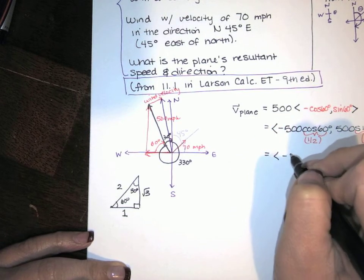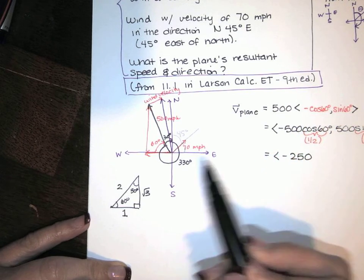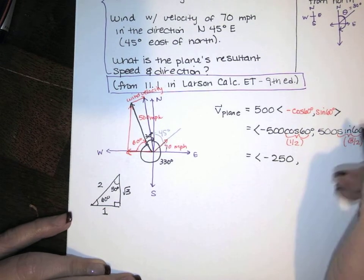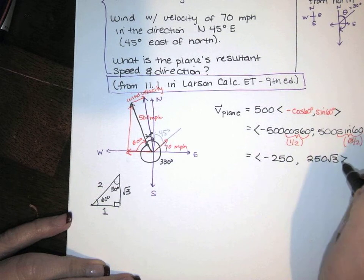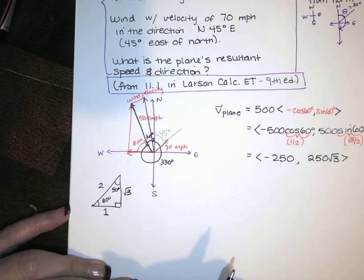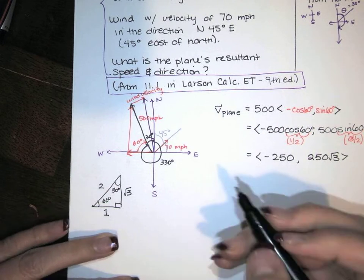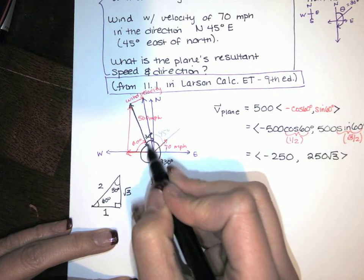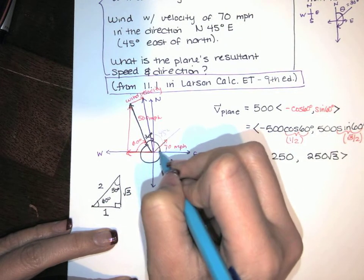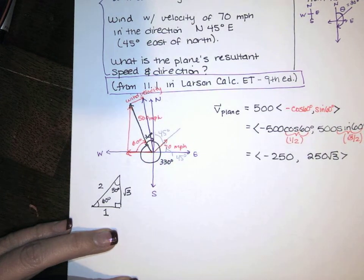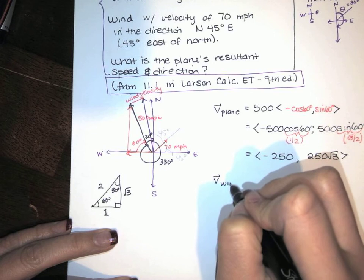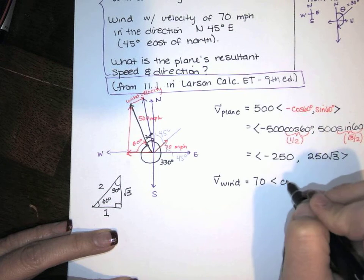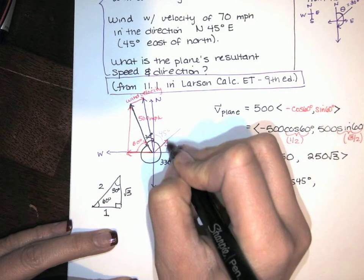So I get 1/2 of negative 500 is negative 250 — that's 250 miles per hour in the negative x direction. And 500 times square root of 3 over 2 gives 250 root 3 miles per hour in the y direction. Adding those two components together gives the original velocity of the plane before the wind. Now for the wind, that's at 45 degrees, so the velocity of the wind is the magnitude 70 times cosine of 45 for the x component, and sine of 45 for the y component.